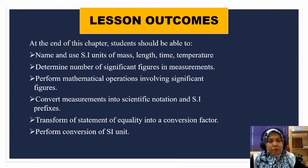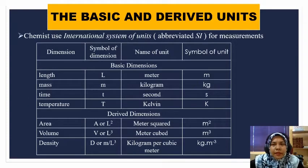Basic and derived units. Chemists use the International System of Units, or we call it SI units, for measurement. There are four dimensions for basic units: length, mass, time, and temperature. For length we use meter, mass is kilogram, time is second, and temperature is kelvin.